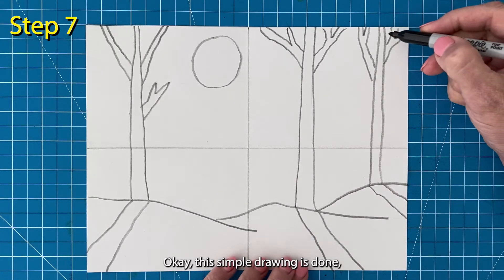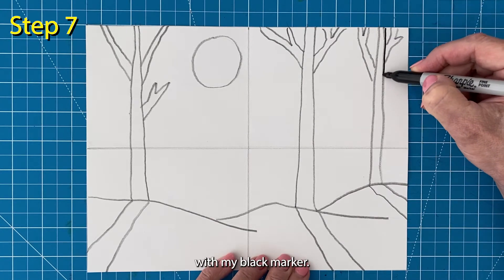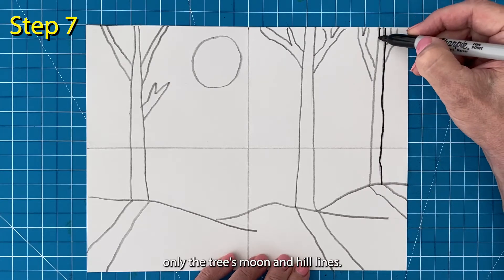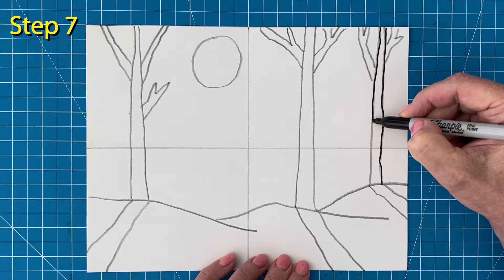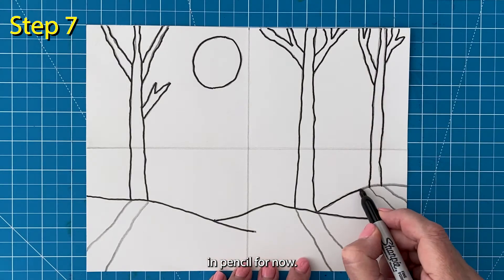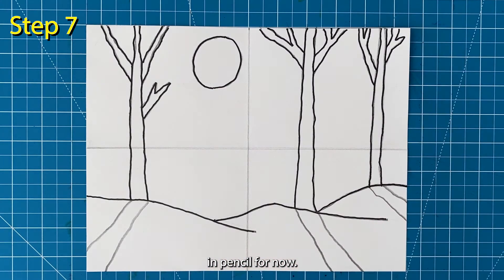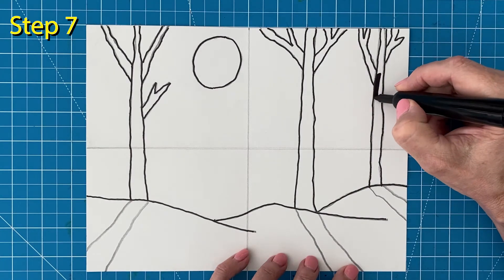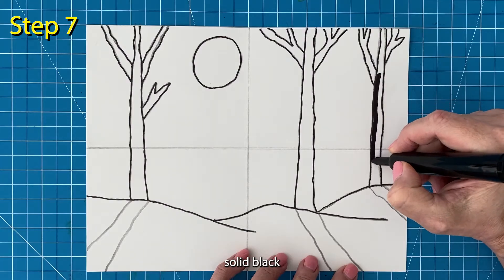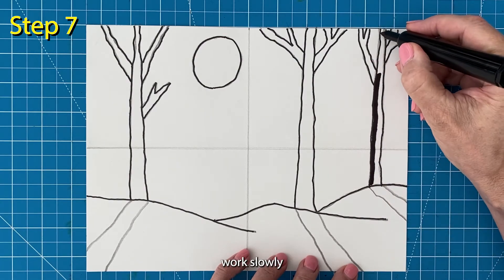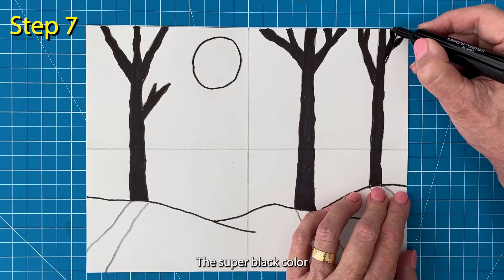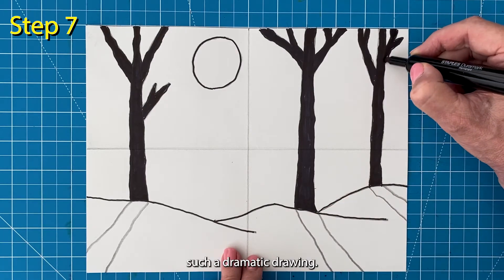Okay, this simple drawing is done and now it's time to trace things with my black marker. Use the fine tip marker to trace only the trees, moon, and hill lines. You can leave the shadows in pencil for now. And now you can use that thick tip marker to fill in all those trees. The goal is to make them really solid black. Work slowly so that by the time you're done no white paper is showing through. The super black color is what makes this such a dramatic drawing.